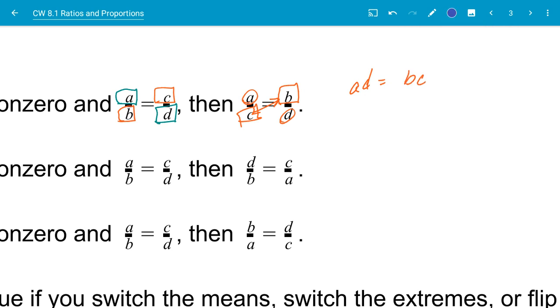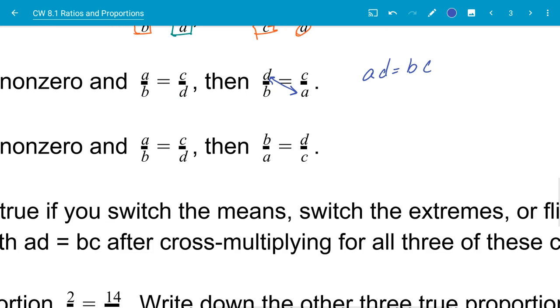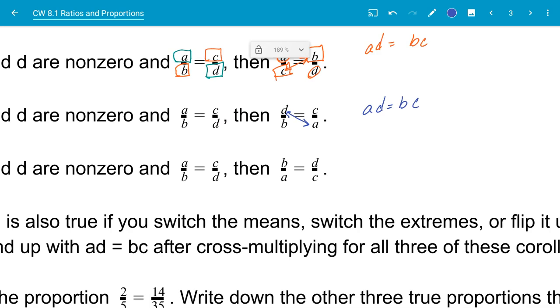By the same token, I can do the same with my extremes to where I can swap places. And I still get A times D is equal to B times C, or I'm still multiplying my extremes, and it's still equaling my means. So those are just some things there that are the same. It doesn't seem really important right now, but when we get into similarity a little bit later on, we actually use these a little bit more, and it becomes a little bit easier.